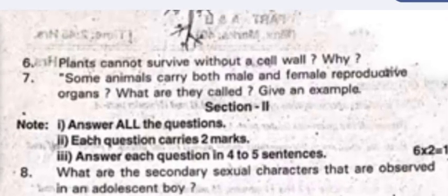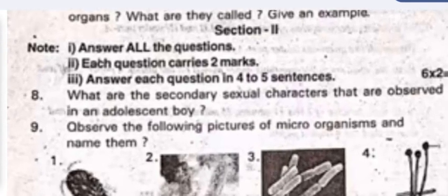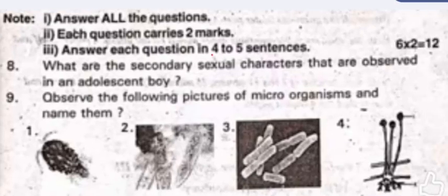Question 6: plants cannot survive without a cell wall — why? Question 7: some animals carry both male and female reproductive organs — what are they called? Give an example. Section 2 — you have to answer all the questions; each question carries two marks and you have to write the answer in four to five sentences.